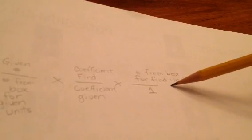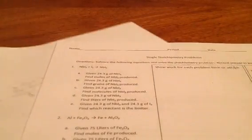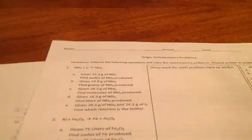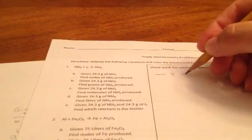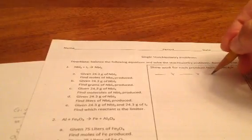In the center of the problem, I've got the coefficient of what I'm trying to find over the coefficient of what I was given. And I also multiply that by the number from the box for the units that I'm trying to find. So every single stoichiometry problem starts out with the template that looks like that.